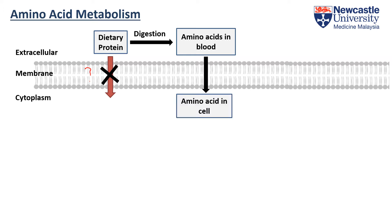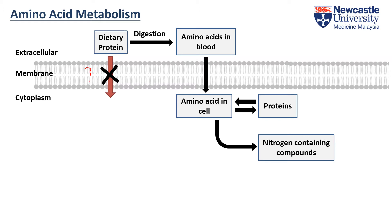So inside our cells, the amino acids can be used for the anabolism of new protein molecules, or sometimes the old and damaged protein can be broken down and recycled to generate more amino acids. Aside from proteins, amino acids can also be used in the synthesis of nitrogenous-containing compounds, such as neurotransmitters, nucleic acids, and so on.